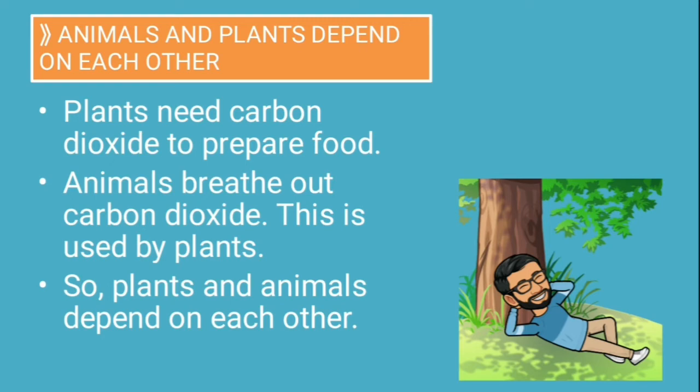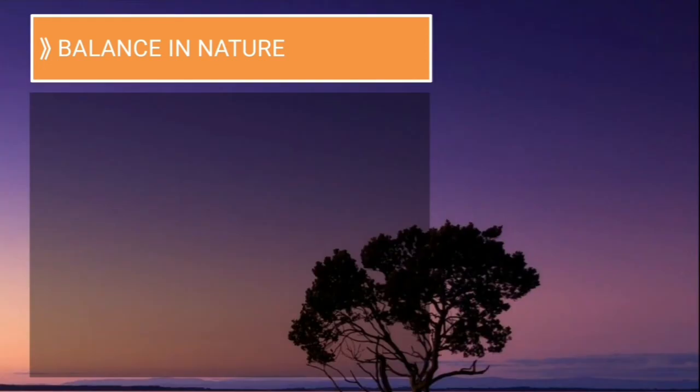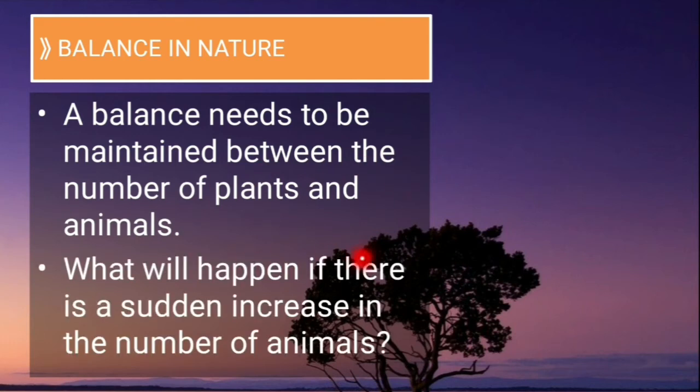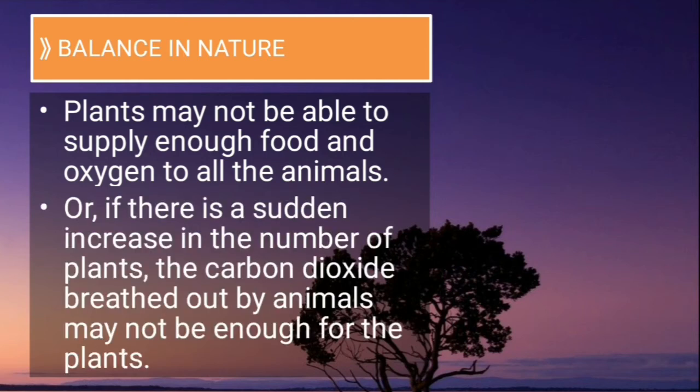Both cannot live without each other. So this is a balance in nature. The number of animals and number of plants should be in proper amount. Only then there will be balance in nature. A balance needs to be maintained between number of plants and animals. What will happen if there is sudden increase in number of animals? Plants may not be able to supply enough food and oxygen to all these animals.